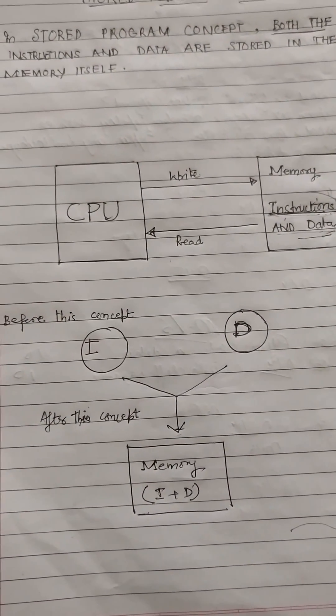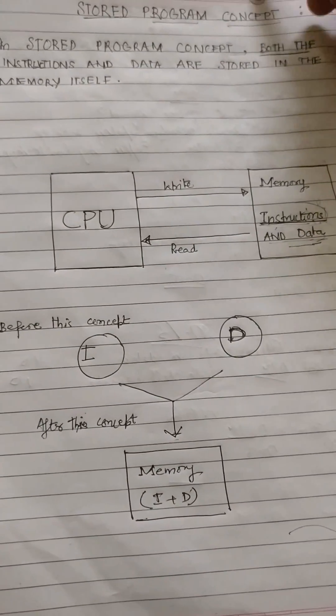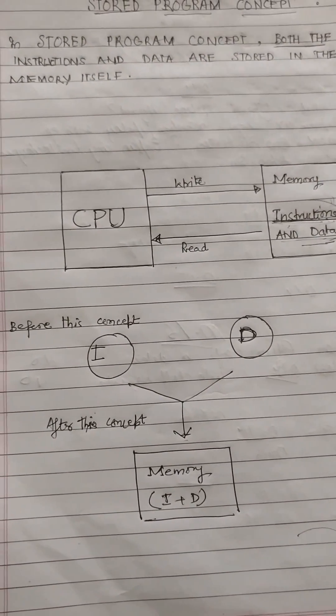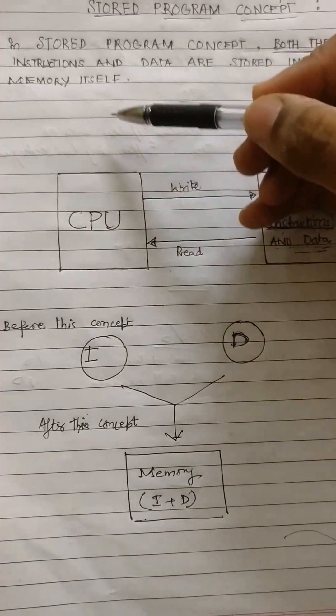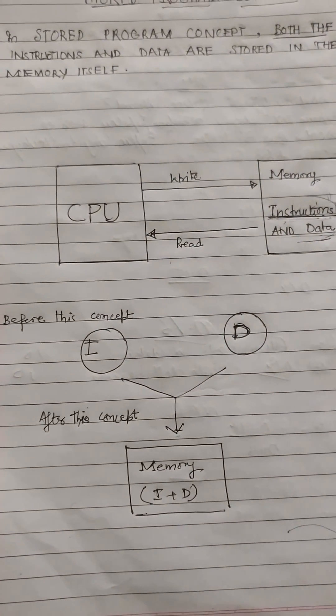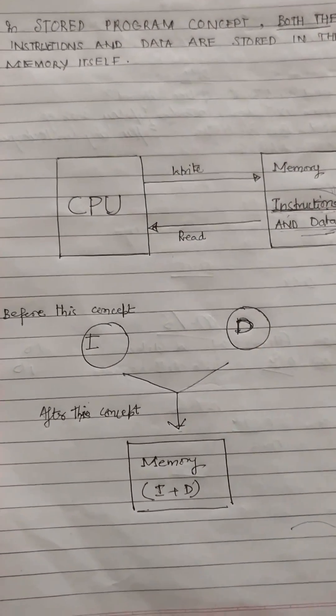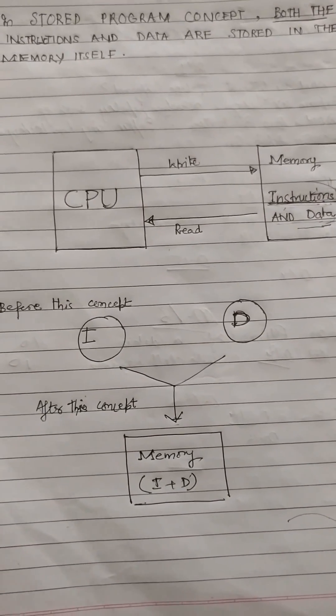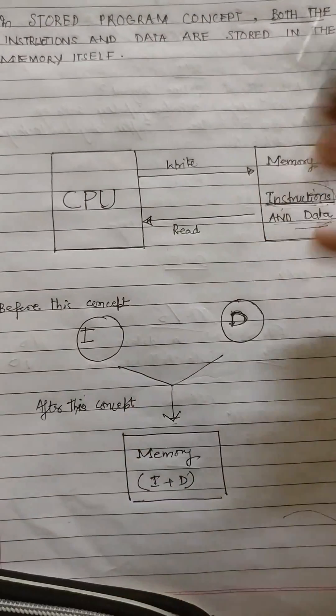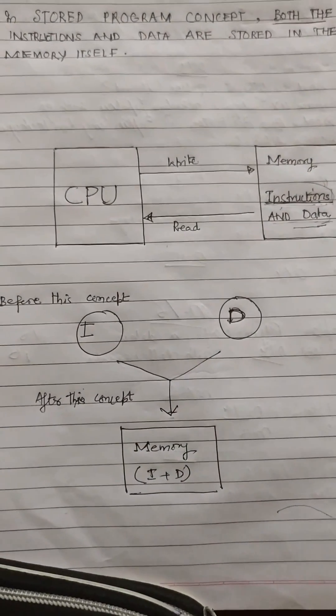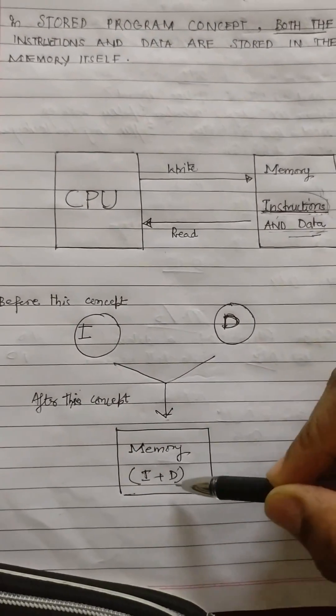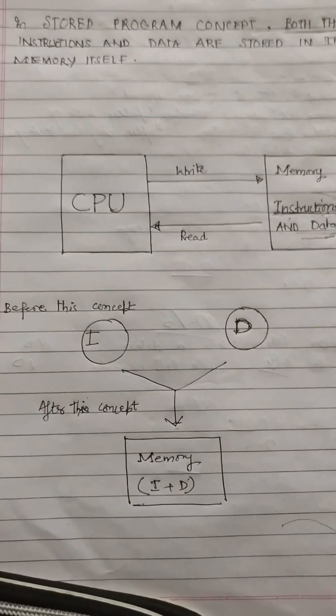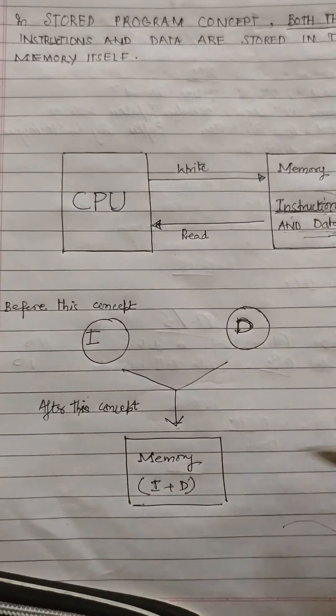This question comes in the exam generally for three marks. First, write this point, then write that earlier instructions and data were two separate entities, and now it is combined in one segment known as memory which contains instructions plus data. Write this point and then draw these two diagrams, and you will get full three marks.